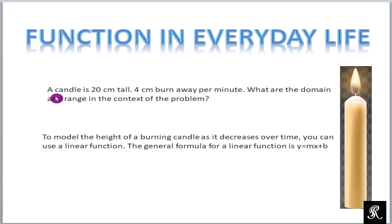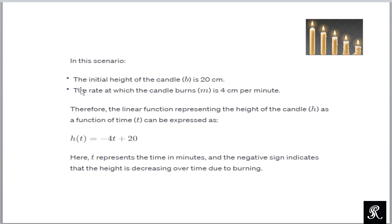To model the height of the burning candle as it decreases over time, you can use a linear function. The general formula for the linear function is y = mx + b. The initial height of the candle is 20 cm. The rate at which the candle burns is 4 cm per minute. Therefore, the linear function representing the height of the candle as a function of time t can be expressed as h(t) = -4t + 20. This 4 is the rate at which the candle will burn per minute, and t is the time. Here we can change the time t to 1, 2, 3 and we will see what will be the candle height after each minute, and this 20 is the initial height.